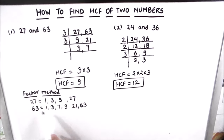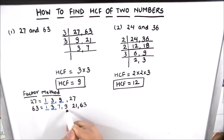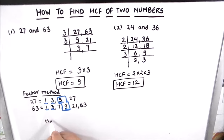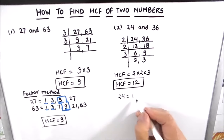We have written all the factors of 27 and 63. The common factors between the two numbers are 1, 3, and 9. Among these, the highest common factor is 9. So the HCF of 27 and 63 is 9.